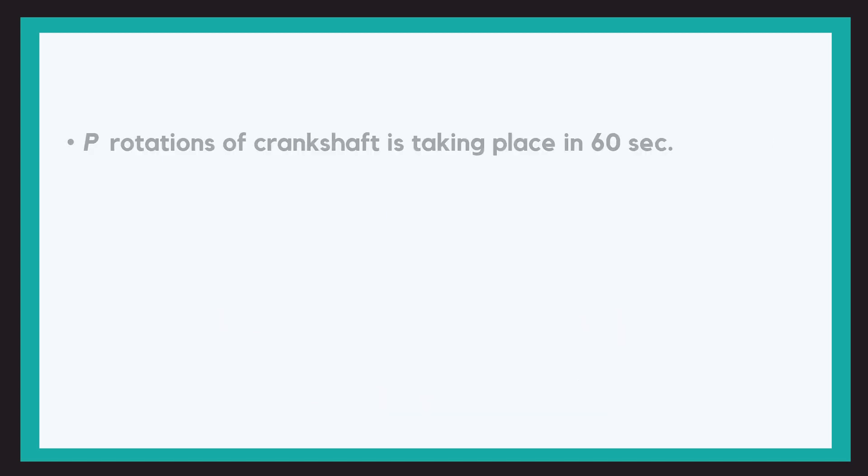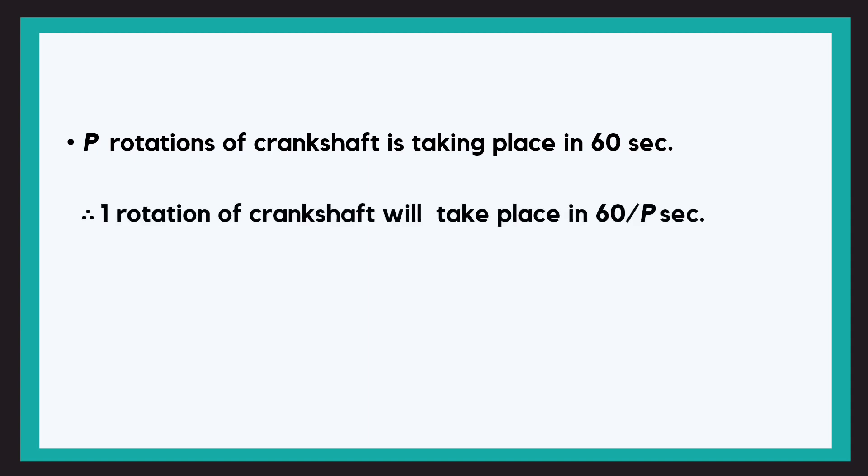Now listen carefully. Assume that P rotations of a crankshaft take place in one minute, that is in 60 seconds. We already saw this in the notations as P is the loom speed in picks per minute, which is also the number of crankshaft rotations in a minute. So one rotation of crankshaft will take place in how many seconds? 60 upon P, that is simple unitary method. If P rotations are 60 seconds, one rotation will be 60 upon P seconds, correct?